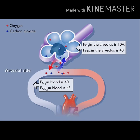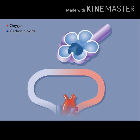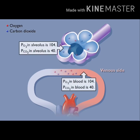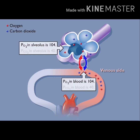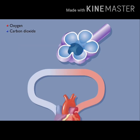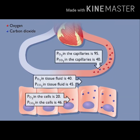Oxygen and carbon dioxide diffuse until there is no difference in partial pressure between the air and the blood. At this point, there is no more net movement of O2 or CO2. Therefore, at the venous ends of the pulmonary capillaries, the PO2 in the blood and alveoli is 104 and the PCO2 in the blood and alveoli is 40. Some oxygen was removed from the blood to nourish lung tissue, so the PO2 in arterial blood leaving the heart is 95.